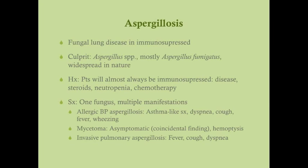Allergic bronchopulmonary aspergillosis presents with asthma-like symptoms. You inhale the aspergillus spores, have an immune reaction, and get bronchopulmonary constriction. This manifests just like asthma — dyspnea, cough, fever, and wheezing. Asthma doesn't just develop out of nowhere, so in immunosuppressed patients who develop asthma-like symptoms, aspergillosis is a possibility.